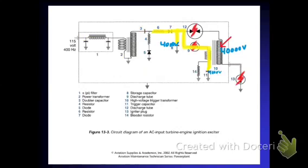This will ionize the gas in 12 and 13. 12 is a discharge tube like we said. When that happens that allows the capacitor at eight to discharge through the secondary, so we're getting 40,000 volts plus the energy that was stored in eight and this is going to prolong the spark that we see in 13 which is our igniter plug.